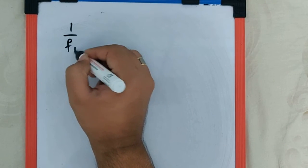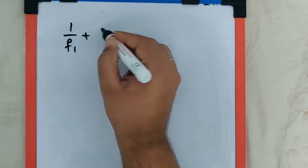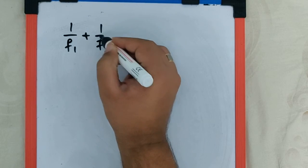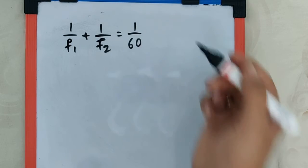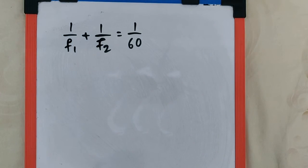The next question says: a combination of two thin lenses with focal lengths f1 and f2 respectively forms an image of a distant object at a distance of 60 cm when the lenses are in contact, which means 1/f1 + 1/f2 = 1/60. This is what they mean by the first part of the question.